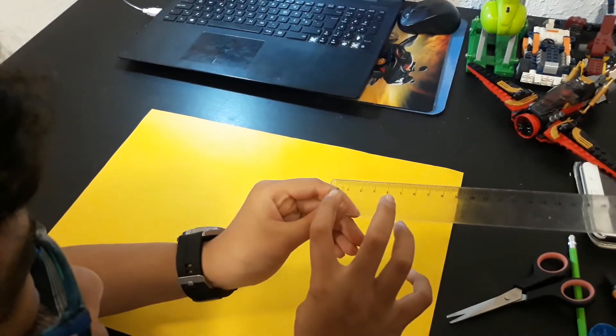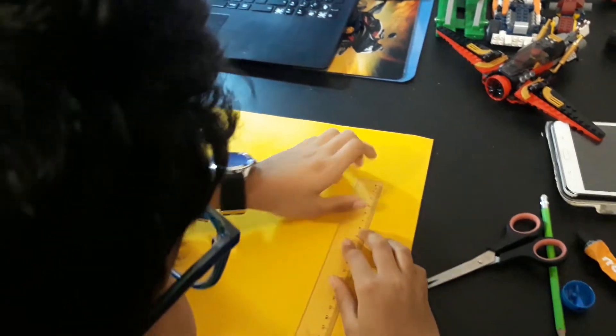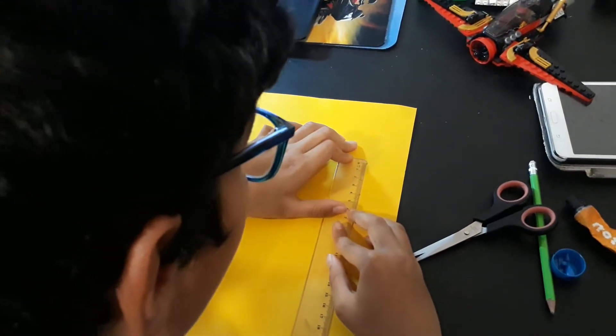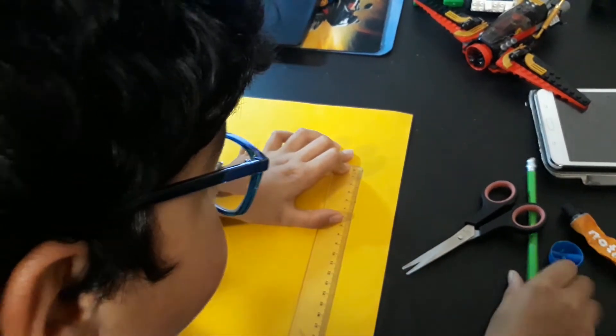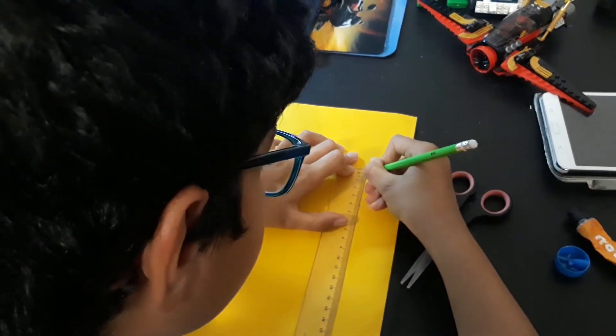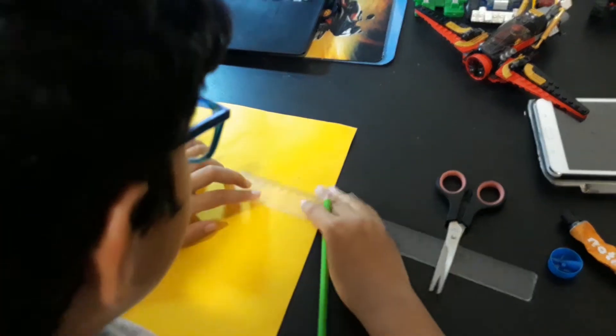So I chose four centimeters to be accurate. Now first we have to draw a square, a 2D normal square, and here.